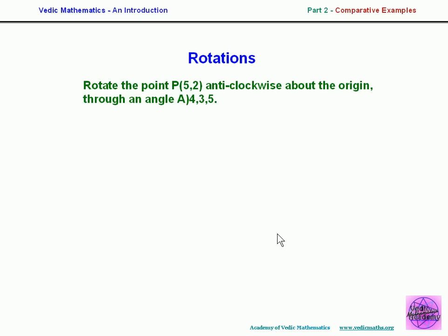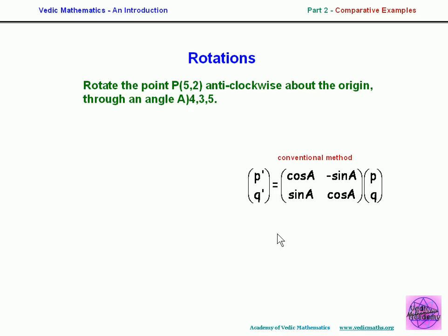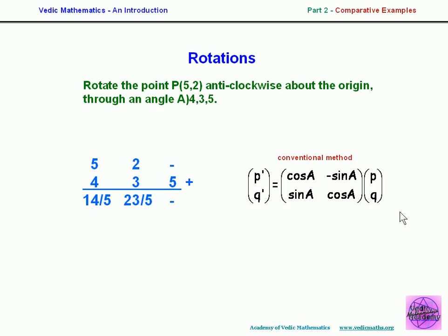For rotating a point anticlockwise about the origin through an angle given by the triple 4-3-5, the conventional method applies a rotation matrix formula using the angle A and coordinates P and Q. You must know the formula, multiply the matrix by the coordinates, and work it all out. In the Vedic system, we use triples again — simply adding the two triples vertically and crosswise to get the answer straight away.